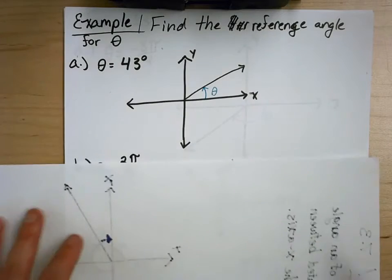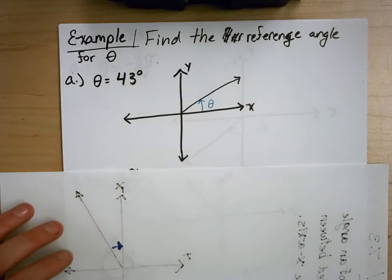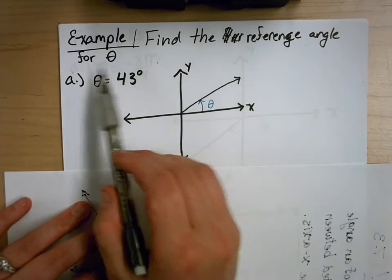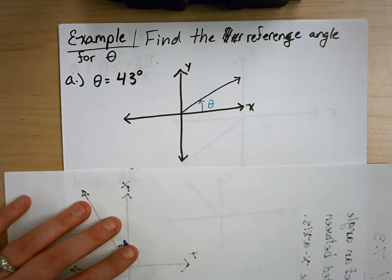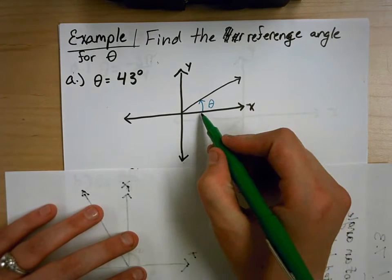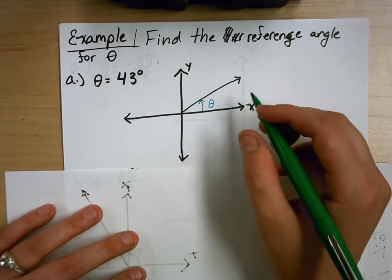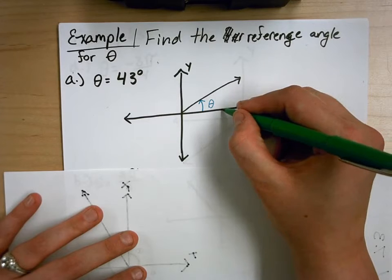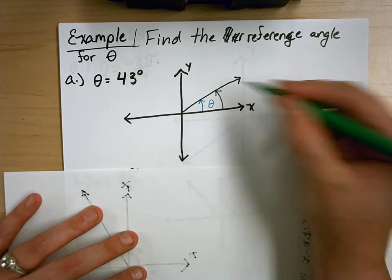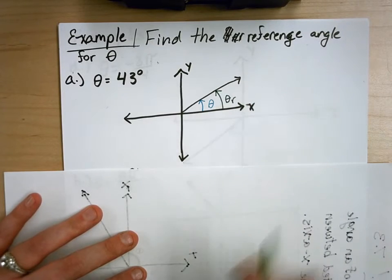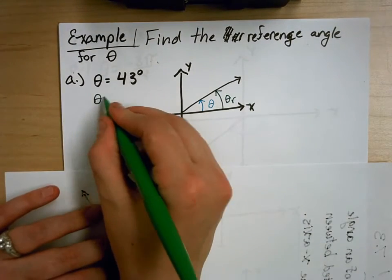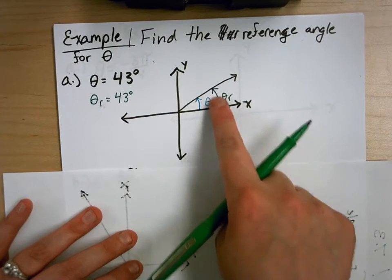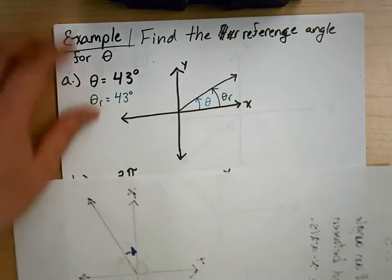Let's find the reference angle for some example thetas. For the first one, here's the terminating side and the x-axis. The acute angle I can create between the x-axis and the terminating side is right here — this is my theta r. In this case, theta r is the same as theta, because I already have a positive acute angle.